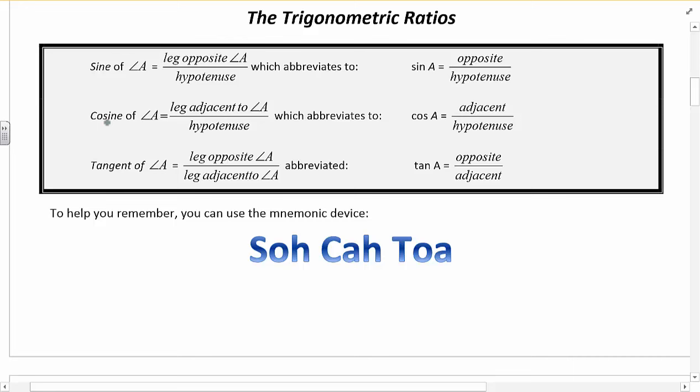For cosine, cosine is the ratio of the adjacent to the hypotenuse. So cos A equals adjacent divided by hypotenuse. And for tangent, tangent is the leg opposite divided by leg adjacent. So we call tangent opposite over adjacent.